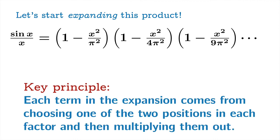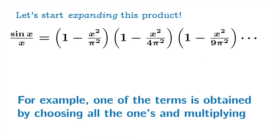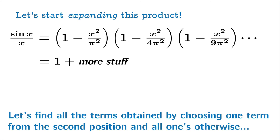And with that in mind, we're going to go back to our problem of expanding this product. So here's the key principle. Each term in the expansion comes from choosing one of the two positions in each factor and then multiplying them out. So in other words, you have to choose either this guy or this guy. And once you've made that choice, you move on and choose one of these and one of these and so on. And then you multiply those together. So for example, one of the terms you're going to get when you expand this product is obtained by choosing all of the ones and multiplying them out. Now we don't need a theory of infinite products to know that if you multiply one by itself infinitely often, you should get one. And so we get the term one. And there are of course more terms. So there's more stuff. Very modest beginning, but we've started our expansion.